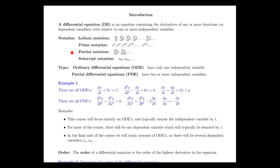For partial derivatives, we have partial notation. If we have the function u with respect to two independent variables t and s, we can take the second derivative of u with respect to t, or we can take the second derivative of u first with respect to s and then with respect to t.